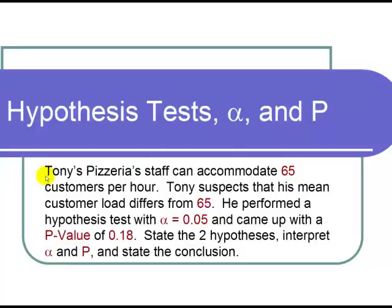The question states, Tony's Pizzeria staff can accommodate 65 customers per hour. Tony suspects that his mean customer load differs from 65. He performed a hypothesis test with alpha equals 0.05 and came up with a p-value of 0.18. State the two hypotheses, interpret alpha and p, and state the conclusion.